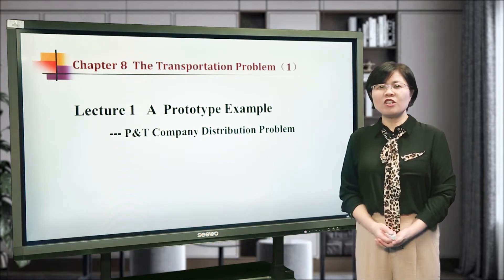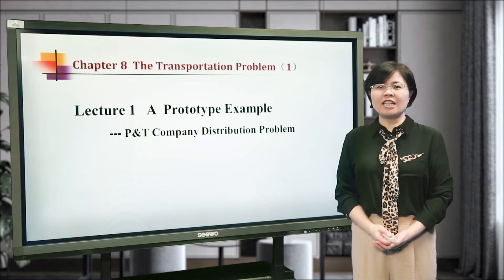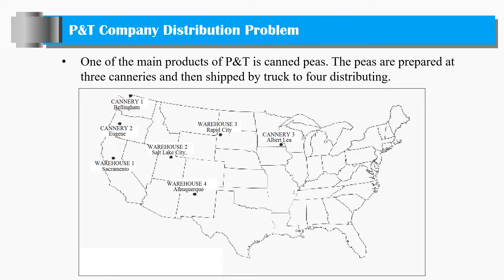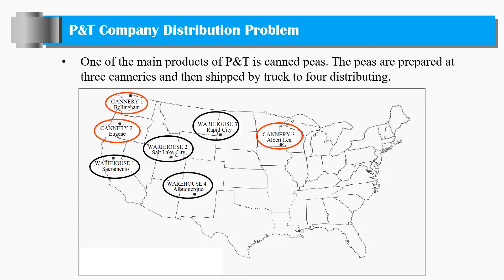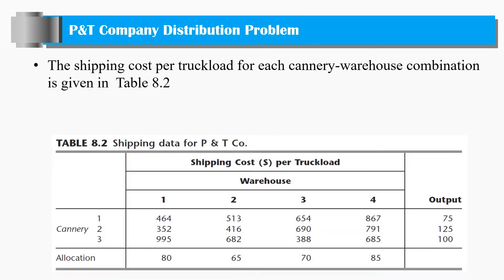For the transportation model, I'd like to show you a particular example: the P&G company distribution problem. As shown in the graph, one of the products of the company is canned peas. The peas are prepared in three canneries and then shipped to four distribution warehouses. The shipping cost per truckload for each cannery-to-warehouse combination is given in this table.